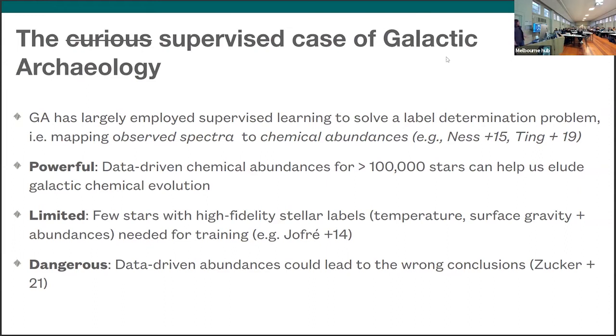My research field is galactic archaeology. Galactic archaeology has been revolutionized over the last few years by the insanely big amount of data that we have from missions such as Gaia, GALAH, APOGEE, and many others. In galactic archaeology, we have so far employed supervised learning to pretty much solve the label determination problem. What I mean by that is we want to map the observed spectra to a set of features that we're interested in for our studies, such as chemical abundances. This is powerful because by getting data-driven chemical abundances for hundreds of thousands of stars, we can understand more about the dimensionality of the Milky Way and solve galactic chemical evolution.